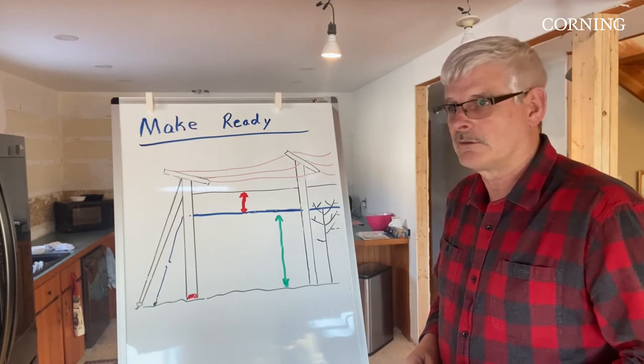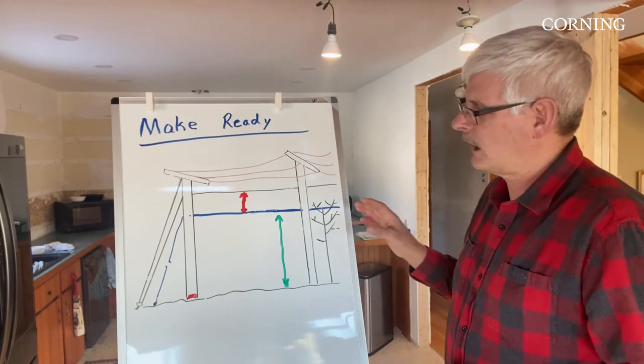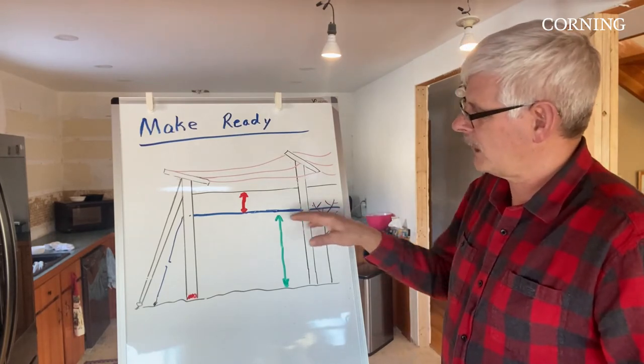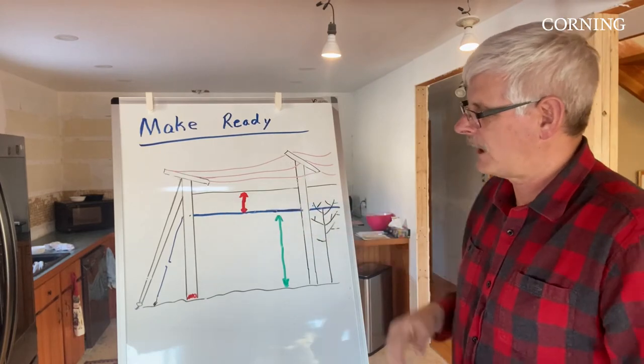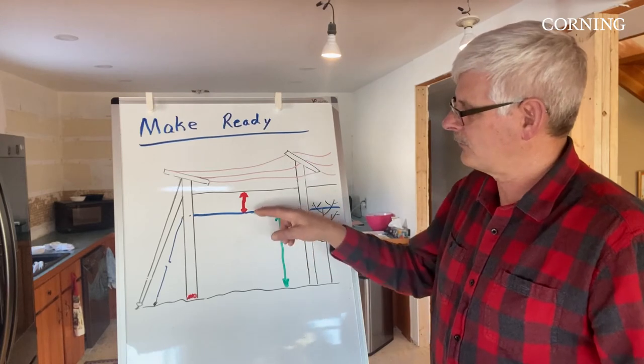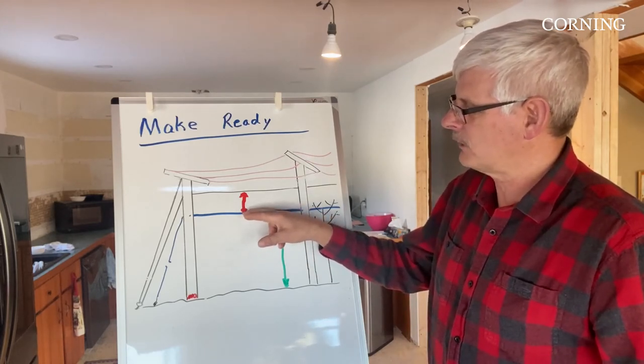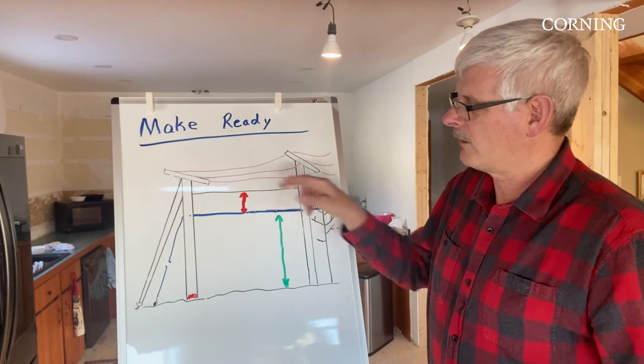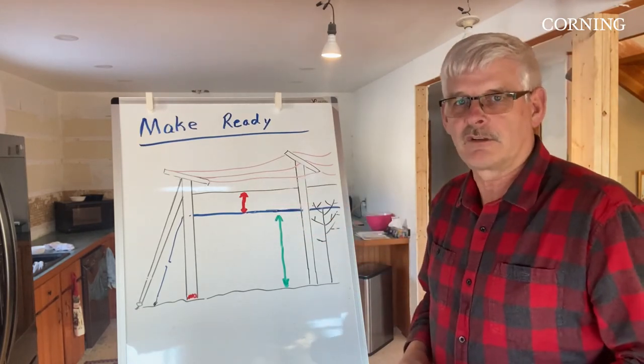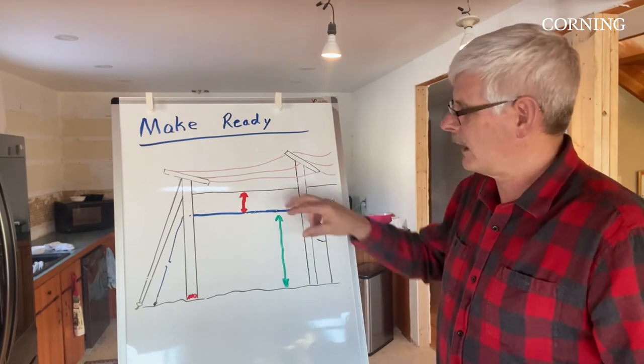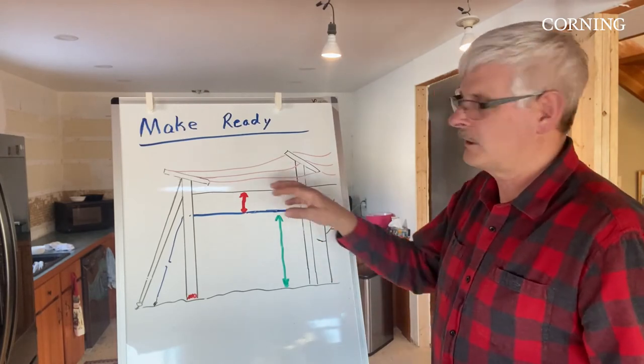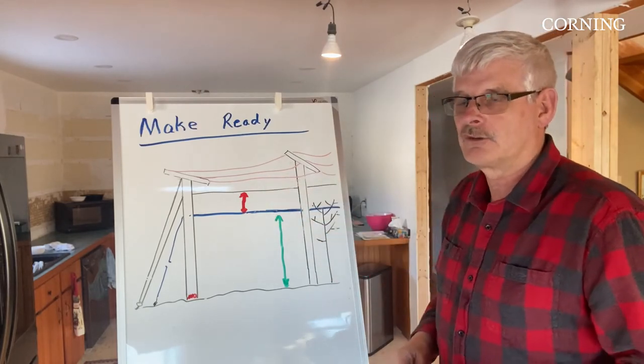Other things they'll do during the make ready process is look at the existing infrastructure, what's on the poles already. In this particular case, we have a telephone cable, communications cable already on this pole line. They're going to look at the separation between the telecommunications cable and the power utilities, to ensure that separation meets the various industry standards from a safety perspective, so a technician can work safely without endangering their life by working too close to the power.